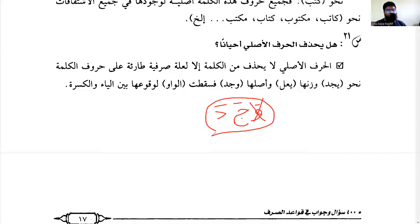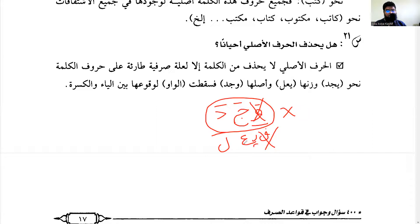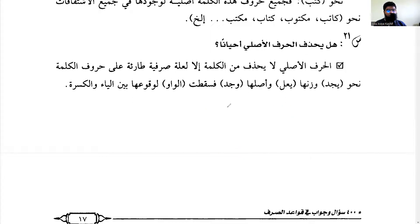Mithal is a word whose first letter is WAW or YA. In most Mithal forms you keep the WAW, but in this pattern (يَفْعِلُ) you drop the WAW. The pattern is يَجِدُ — its origin (أَصْلُهَا) is وَجَدَ, so the WAW, which is the Fa-Kalima (first root letter), was dropped.